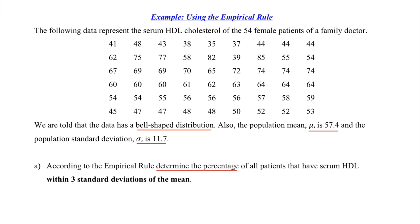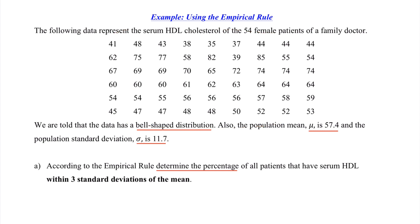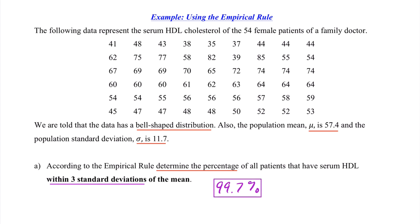Heading to Part A: according to the empirical rule, determine the percentage of all patients that have serum HDL within three standard deviations of the mean. You might think you need to put all this data in your calculator, but in fact we don't. Since it says 'according to the empirical rule' and we have a bell-shaped distribution, no math is needed. We know that 99.7% of the data is within three standard deviations of the mean. And that's it — we have our answer.